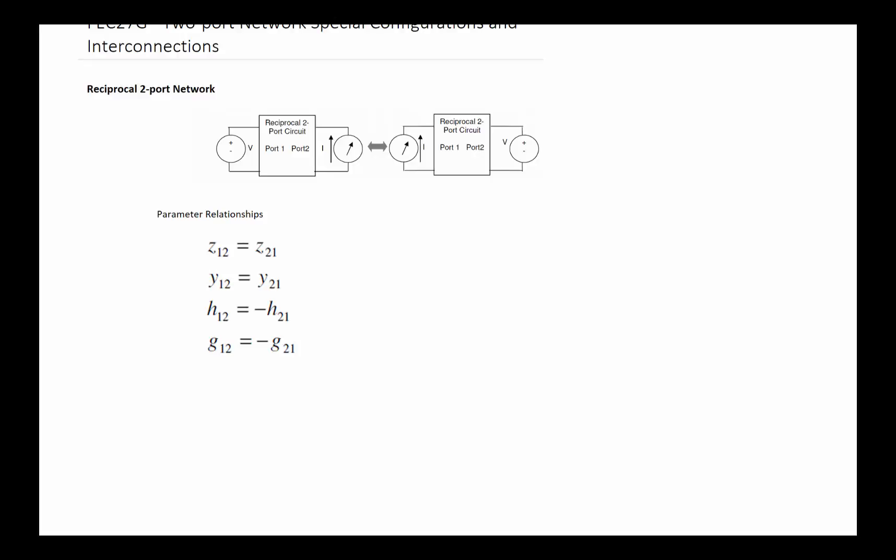In this video we're going to talk about a couple of special configurations of two-port networks simply because these configurations simplify our work of writing the parameters and using the parameters. Later in the video we're also going to talk about how these two-port networks can be connected to each other. So let's go ahead and start with the special configuration.